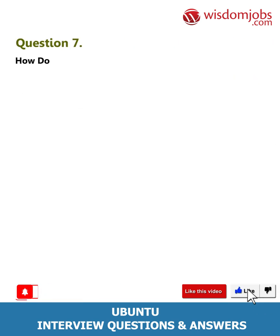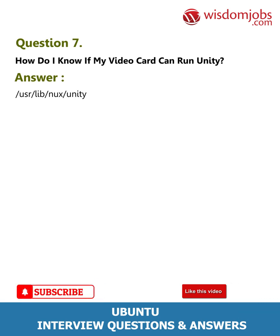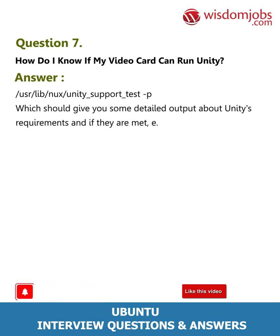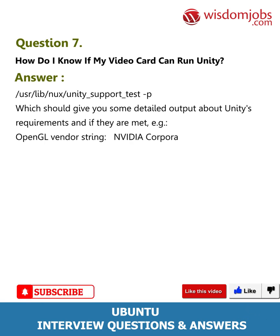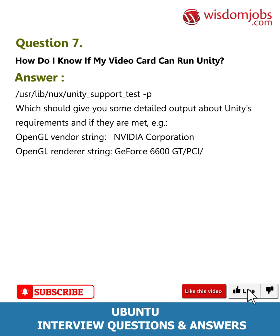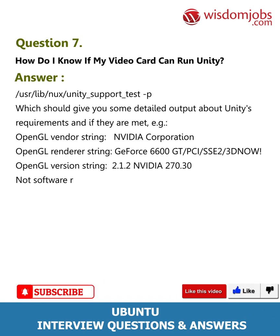Question 7: How do I know if my video card can run Unity? Run: /usr/lib/nux/unity_support_test -p, which gives detailed output about Unity's requirements and whether they are met. For example: OpenGL vendor string: NVIDIA Corporation; OpenGL renderer string: GeForce 6600 GT/PCI/SSE2/3DNOW; OpenGL version string: 2.1.2 NVIDIA 270.30.